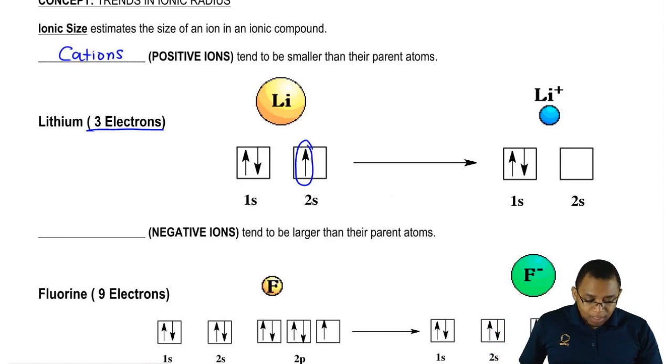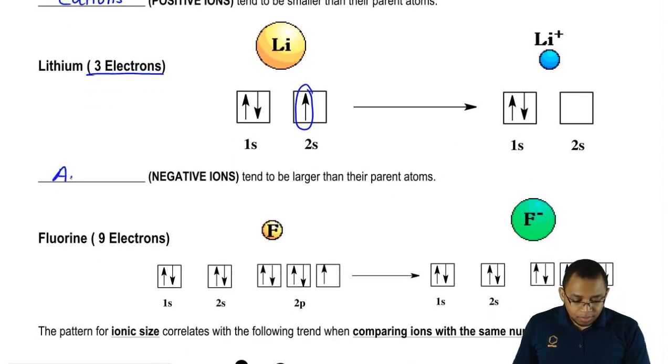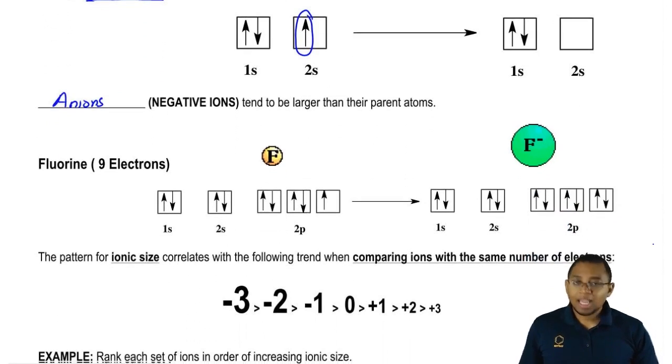We're going to say in the opposite way, anions tend to be bigger than their parents. Fluorine, neutral fluorine has nine electrons. When we add an additional electron, we're adding mass to it. Maybe a small amount because electrons are very, very small.